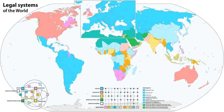Still, many states retain selected common law crimes. For example, in Virginia, the definition of the conduct that constitutes the crime of robbery exists only in the common law, and the robbery statute only sets the punishment.